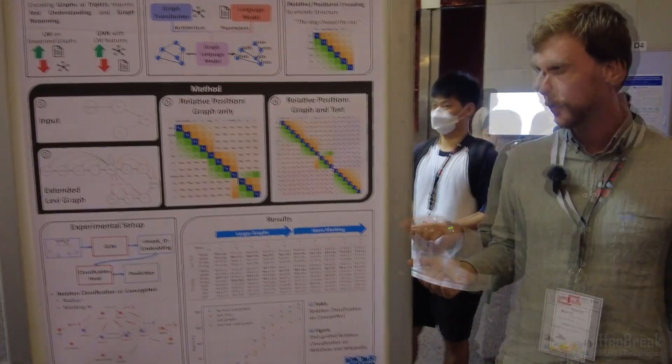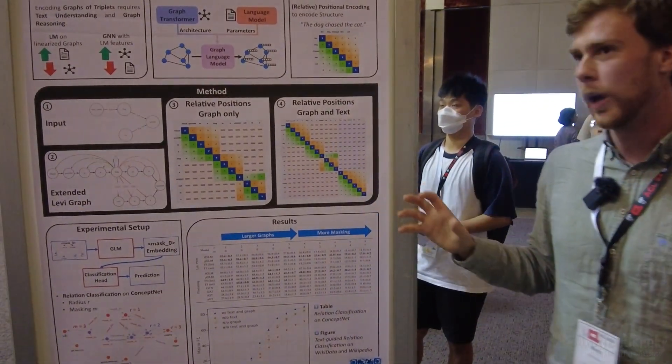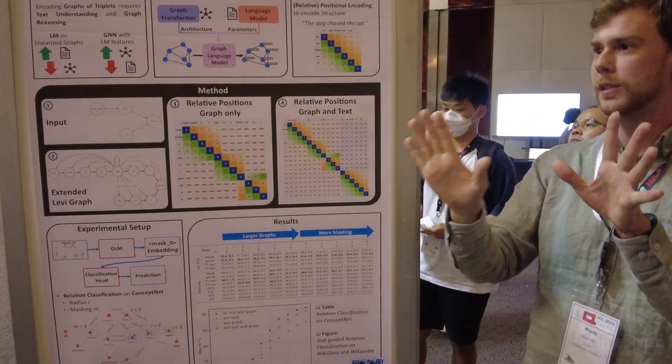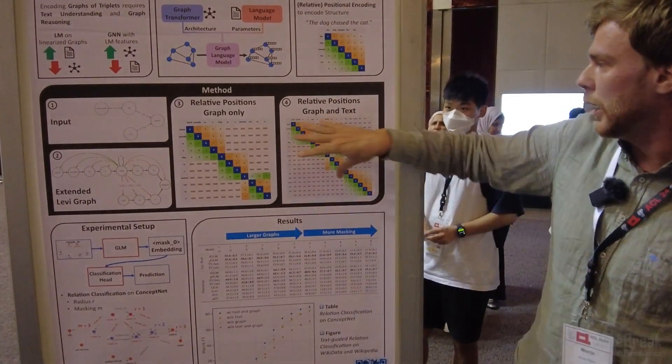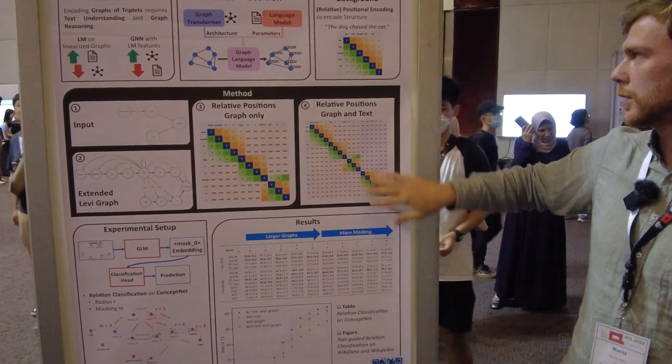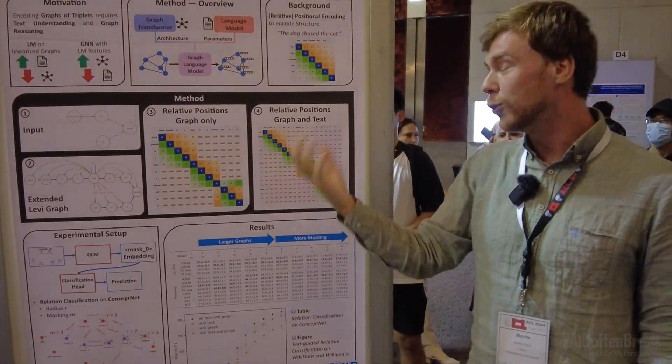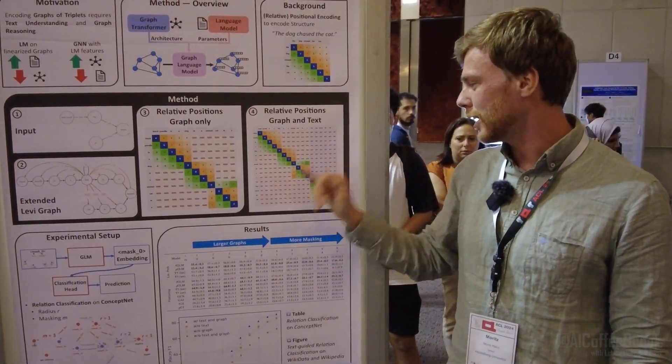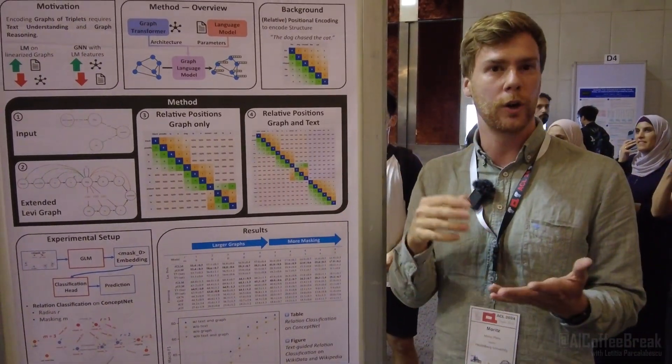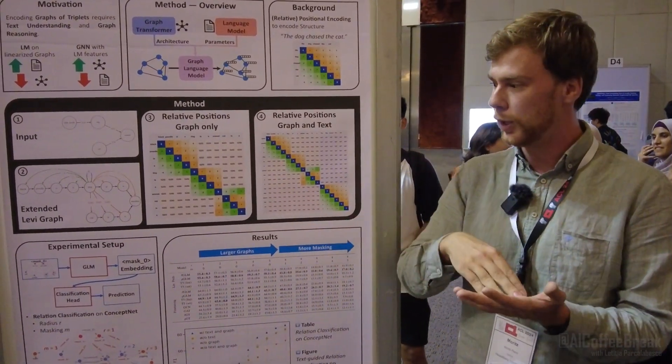Another thing we can do with this model is to have both a graph as well as a separate text. Here we have the graph as before, and then we encode the text as normal in the same model, same set of parameters. We have a new relative distance again, namely graph-to-text and text-to-graph, such that the model can learn how much each modality should attend to the other one.